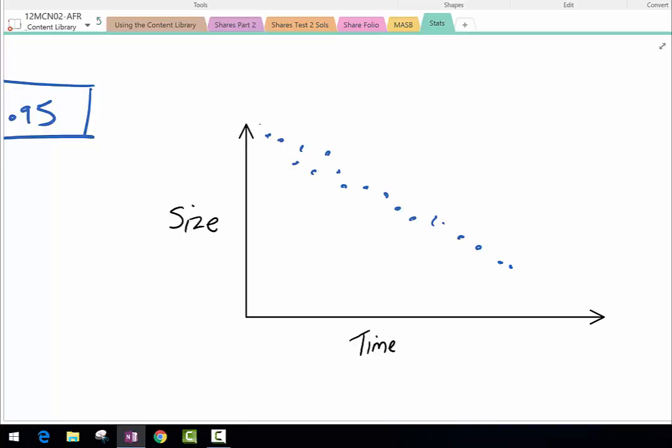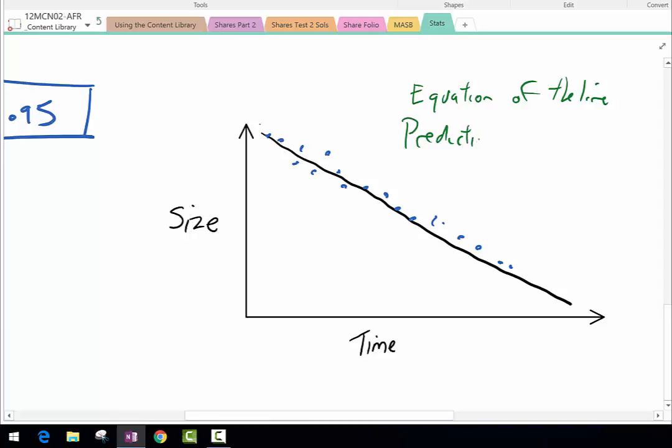The thing with working out a graph of a scatter plot like this is that we end up with a line of best fit. With that line of best fit, we can write the equation of the line, and then we could also do predictions using that line.